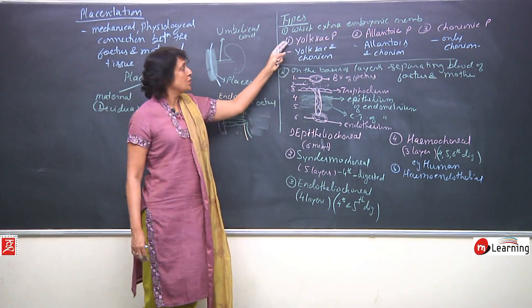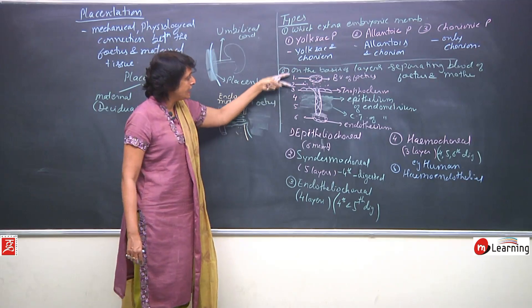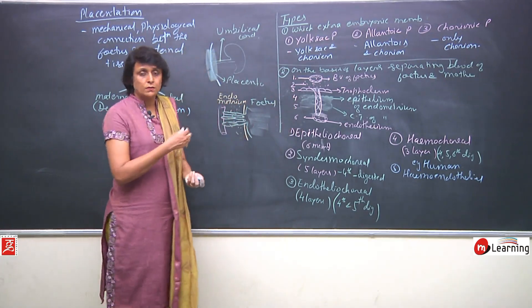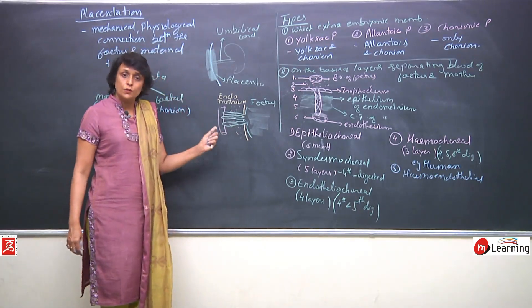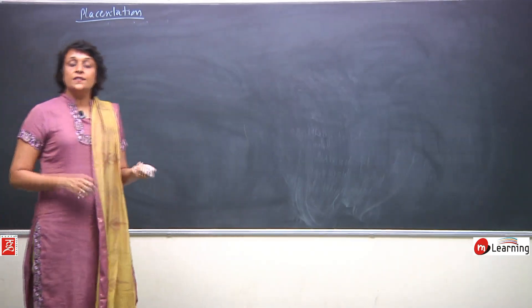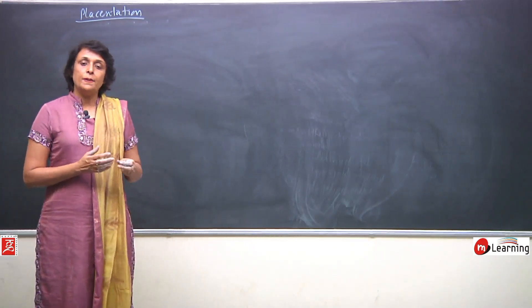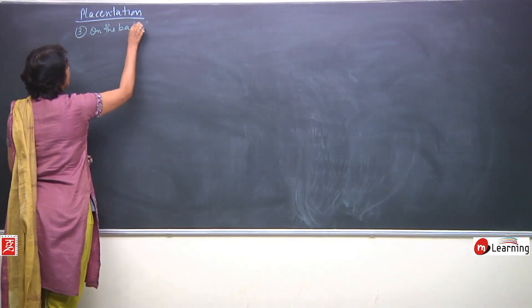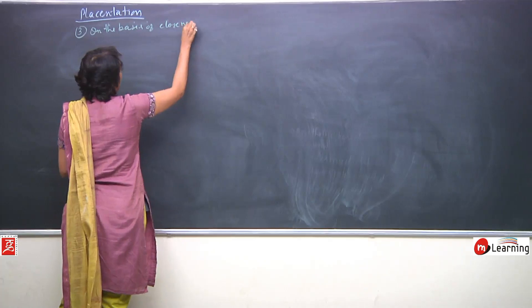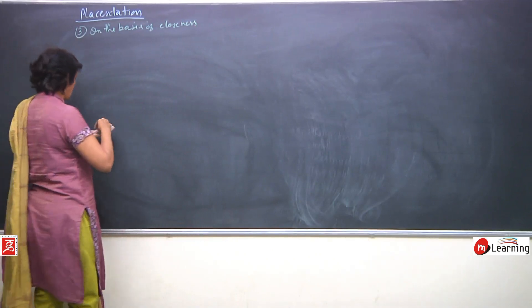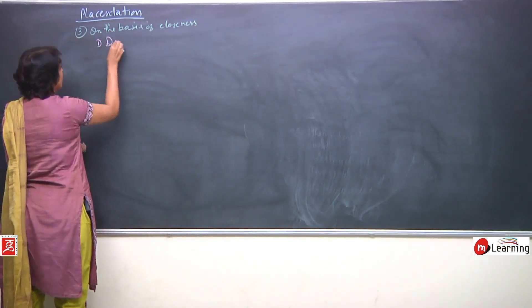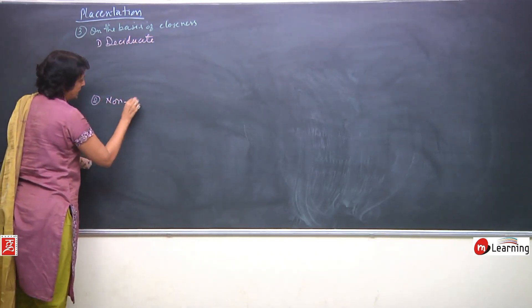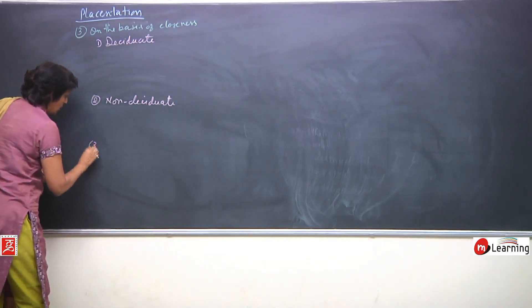We have seen two classifications. The third classification is based on the intimacy or closeness between the maternal placenta and the fetal placenta. There are three types according to this: deciduate, non-deciduate, and contra-deciduate.